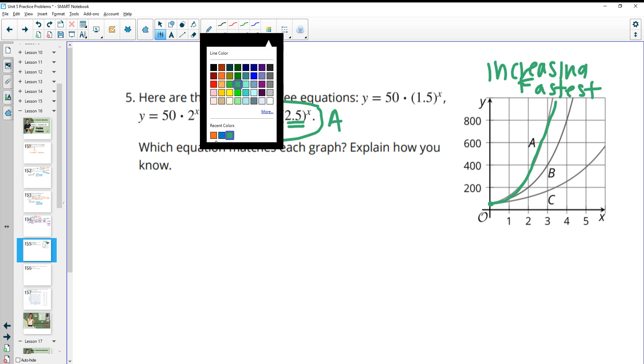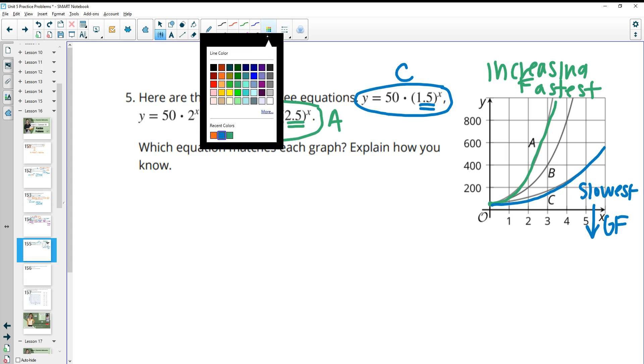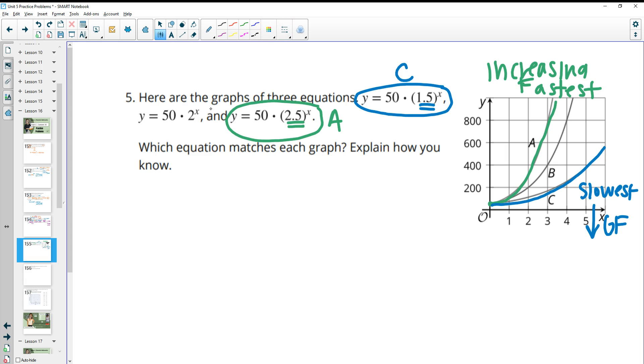So then similarly, C is on the bottom, so it's increasing the slowest. This means it's going to have the lowest growth factor of the three. So if we look at these other ones, we've got 1.5 versus 2. So that means this is graph C. And that would leave this one to be graph B, right in the middle there.